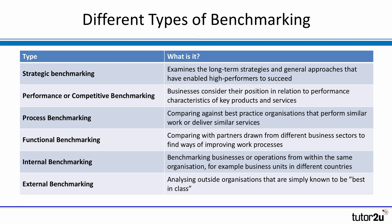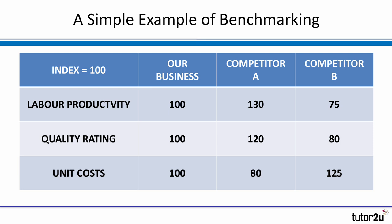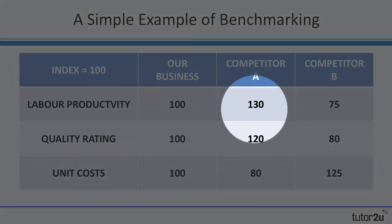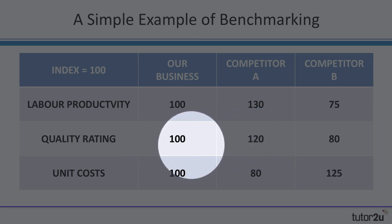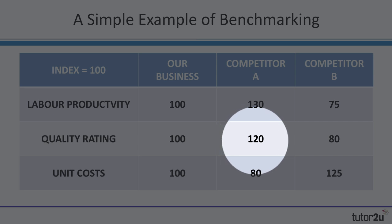Here's a very simple example to illustrate the process. In the table here, we show some data using index numbers — an index number based on 100. How does our business compare on three key metrics against two competitors, competitor A and competitor B? Competitor A has a higher labour productivity than we do: 130 versus 100, so 30% more productive. They also have a higher quality rating — 120 versus our 100 — suggesting a 20% advantage in quality.